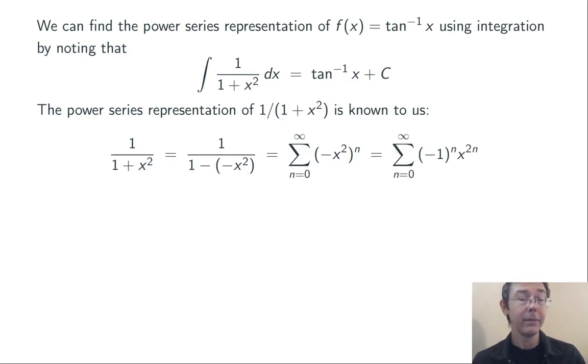So rewriting that slightly, sum n equals 0 to infinity, negative 1 to the n, x to the 2n.